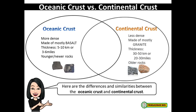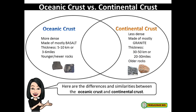Continental crust is less dense, made of mostly granite rocks, with a thickness of 30 to 50 kilometers, or 20 to 30 miles, and consists mostly of older rocks. For the similarities of the two crusts, they are both made of rocks, they are solid, make up tectonic plates, and are part of the lithosphere.